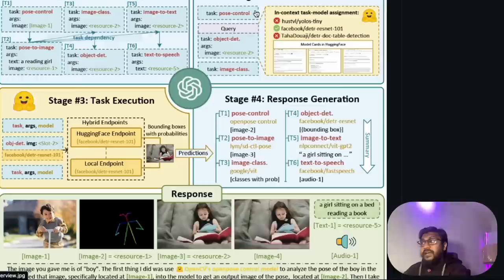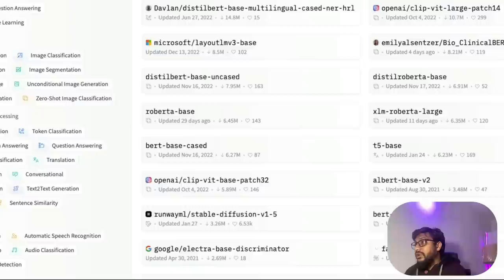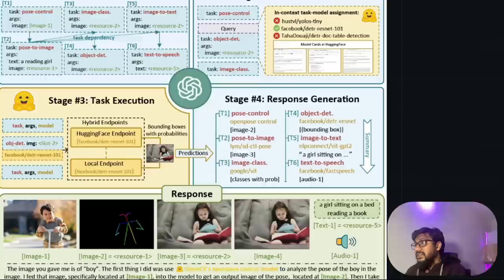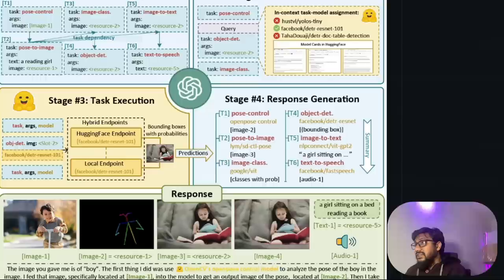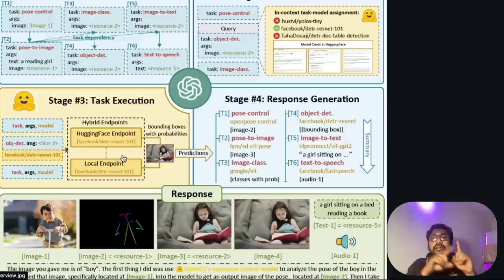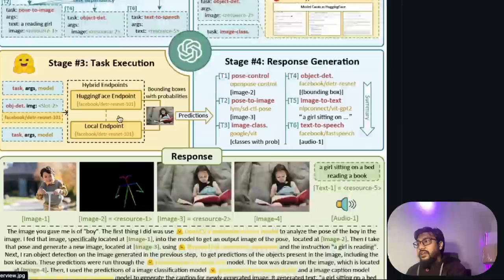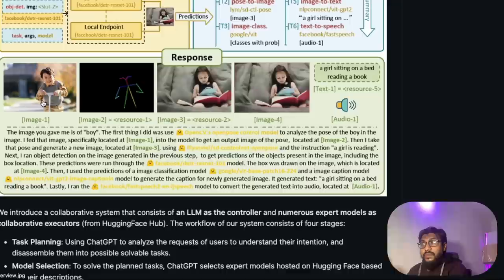After that, the respective models are selected. Out of these models, which model should I pick? Which model should I not pick? For that, it actually goes to HuggingFace Model Hub. The moment you want to do pose, you can search for pose and see what kind of models are available for pose control and thereby create new images. The third stage, the actual thing is getting executed. First, we plan the task. Second, we identified the open source models to do the task. Third, we have executed the task. And fourth, the response is generated and finally collated and given back to us.